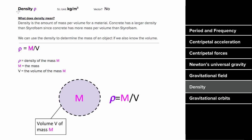Sometimes in gravitational problems you'll be given density instead of mass. Density is the amount of mass per volume for a given material. The symbol is the Greek letter rho, found by taking mass divided by volume, with units of kilograms per meter cubed. It's not a vector, but it lets you solve for mass: mass equals density times volume.